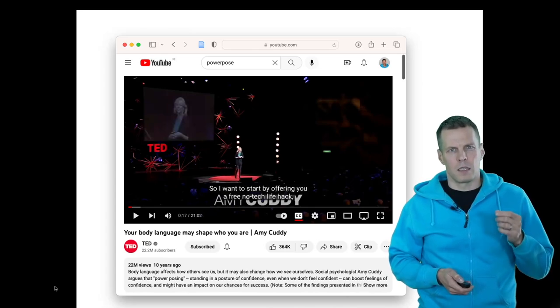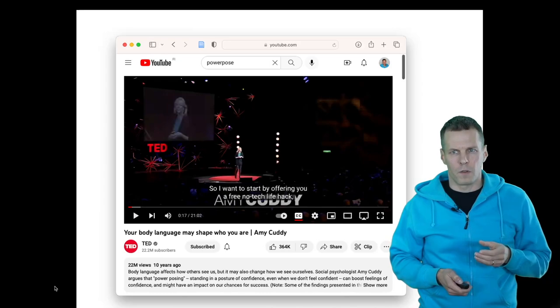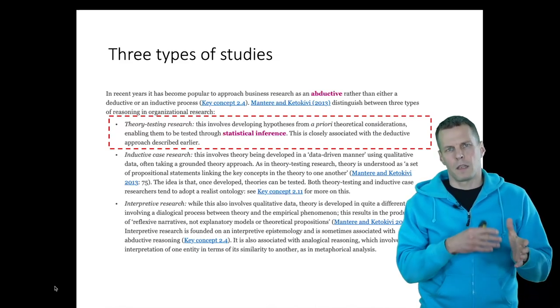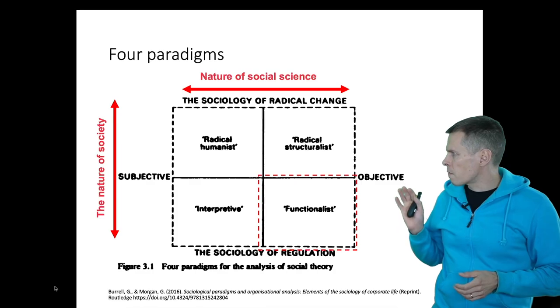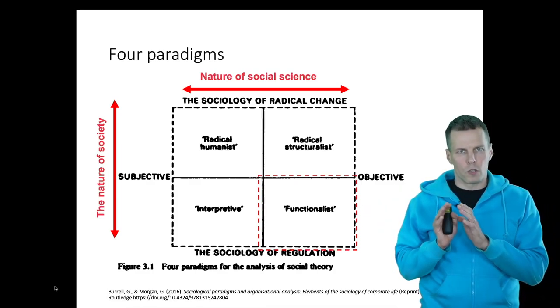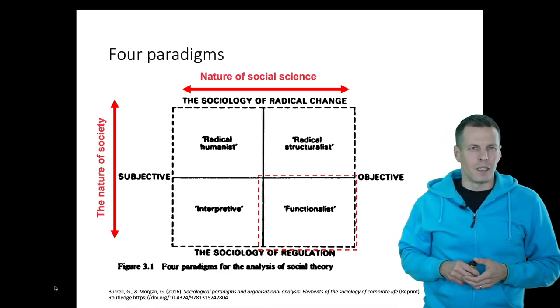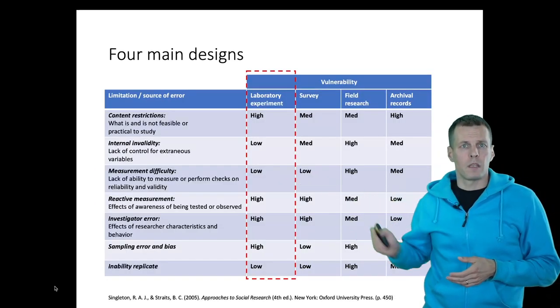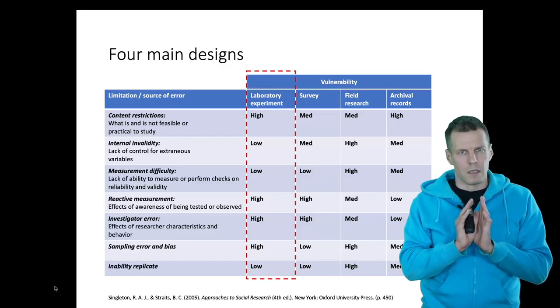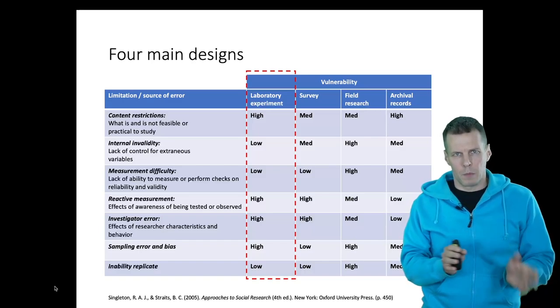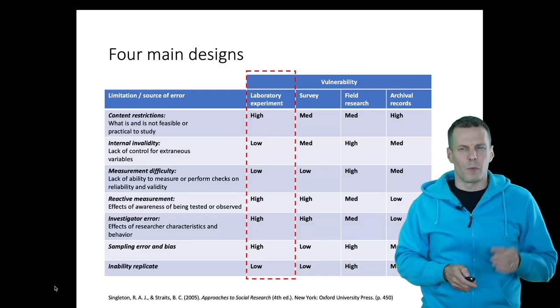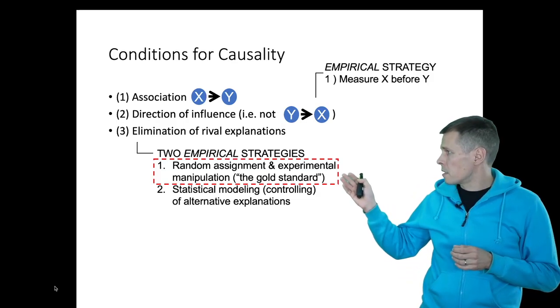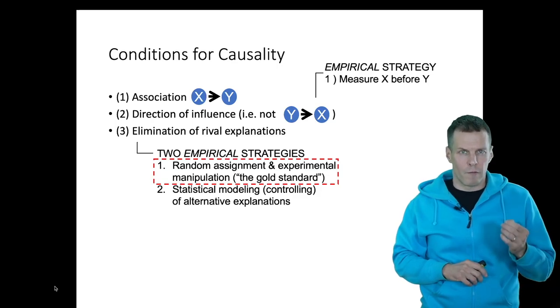Let's take a look at how this study positions into the different classifications that I've gone through thus far. This is a theory testing study - they present a theory in the beginning of the paper and then test it with an experiment. In the paradigms framework, this is functionalist research. In terms of research designs, this is an experiment because there is a manipulation and they are assigning subjects into treatment and control. Quantitative studies are often focused on causality, and this takes the first strategy - randomization and treatment - for eliminating rival explanations.